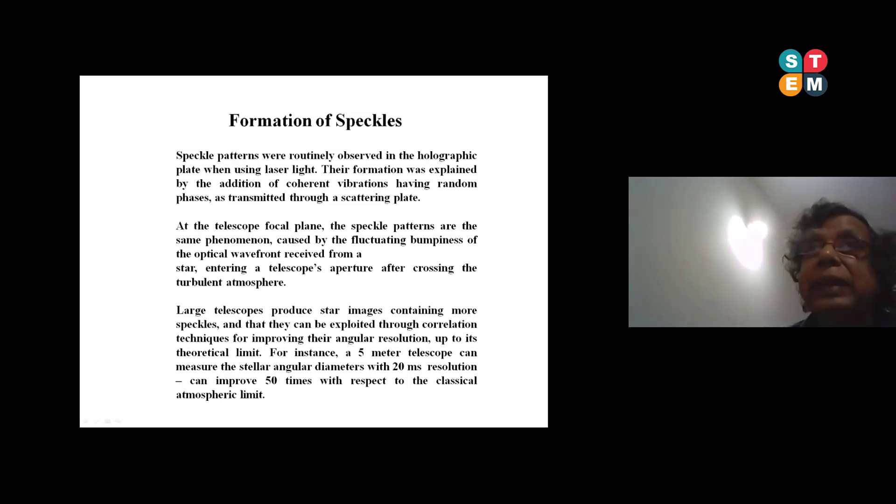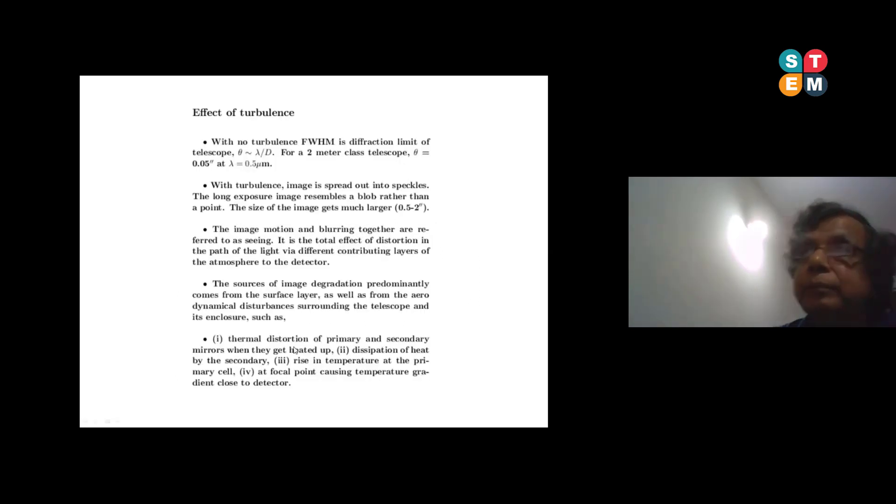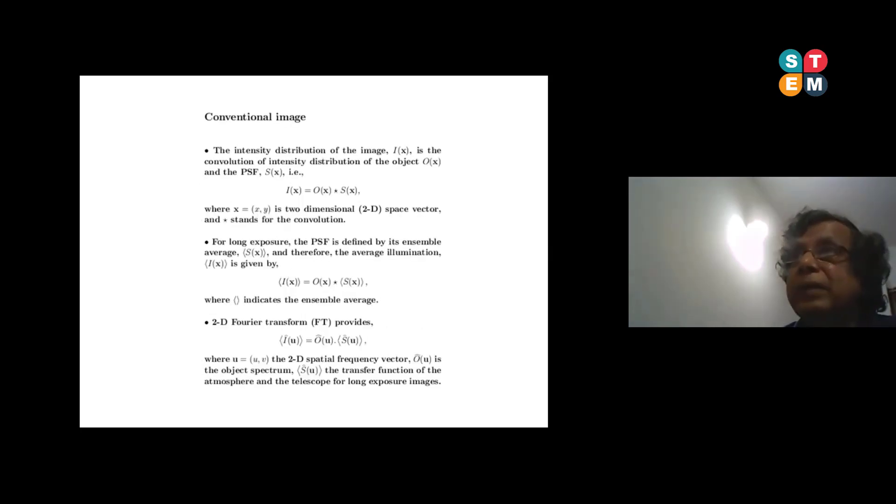To correct that, there are two ways: one is offline, another one is online. Offline is called speckle interferometry. The seeing is not only the atmospheric problem, it has got even the mirror problem - the thermal distortion of primary and secondary mirrors when they get heated up, dissipation of heat by the secondary, rising temperature at the primary cell at focal point causing temperature gradient close to the detector.